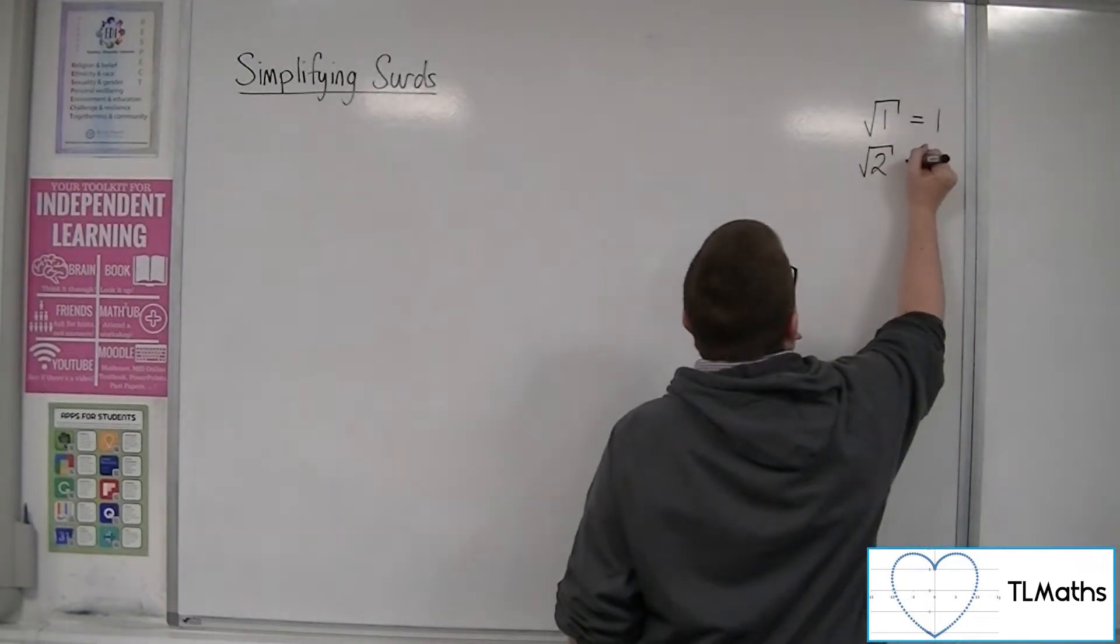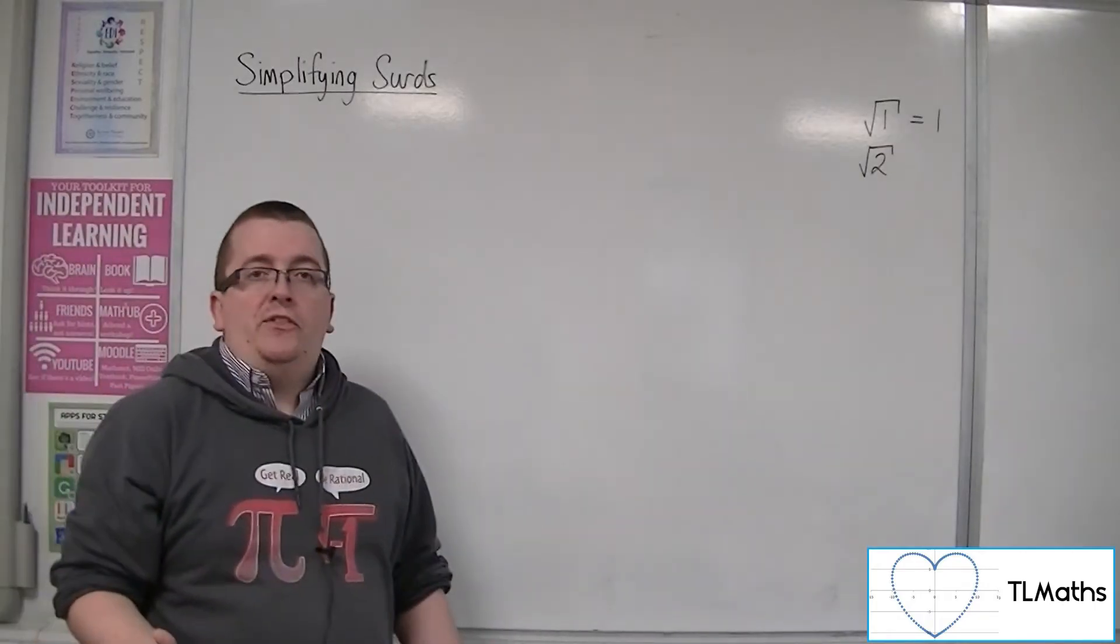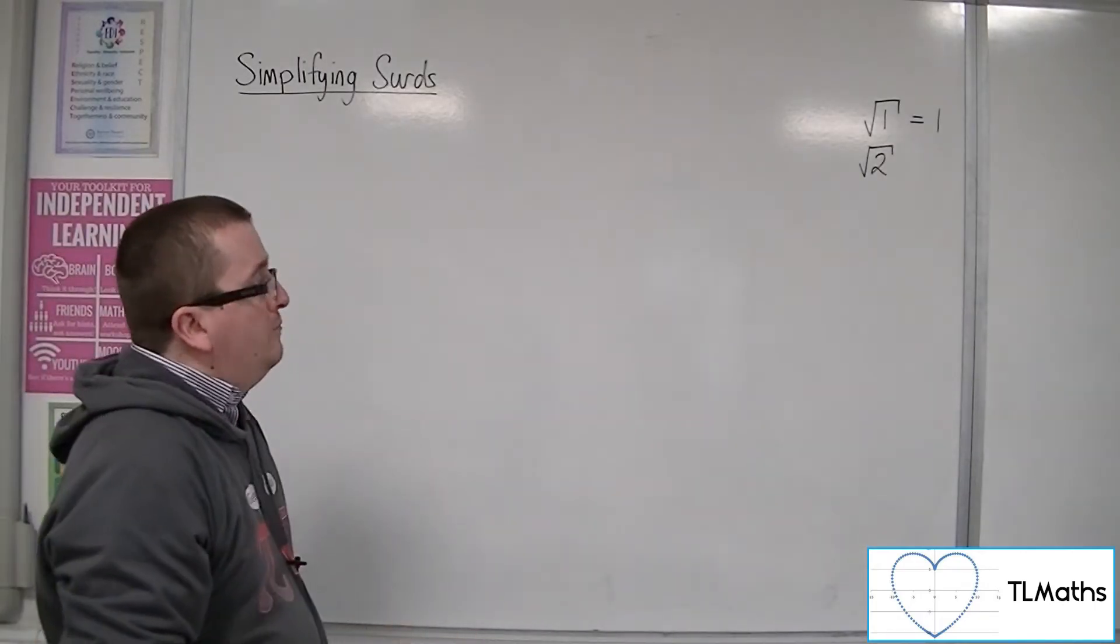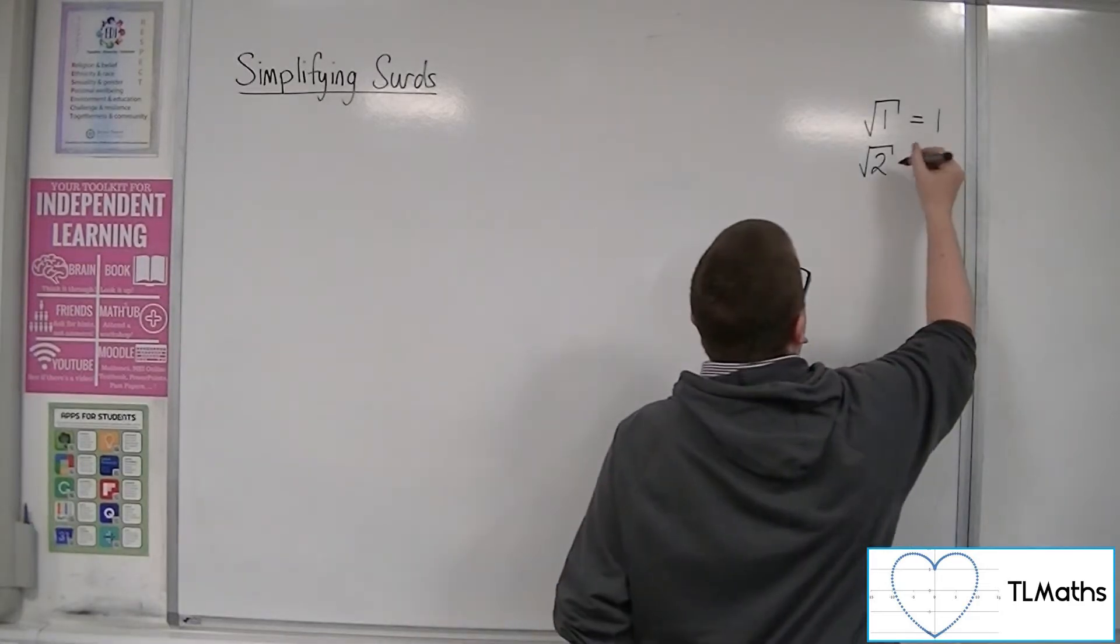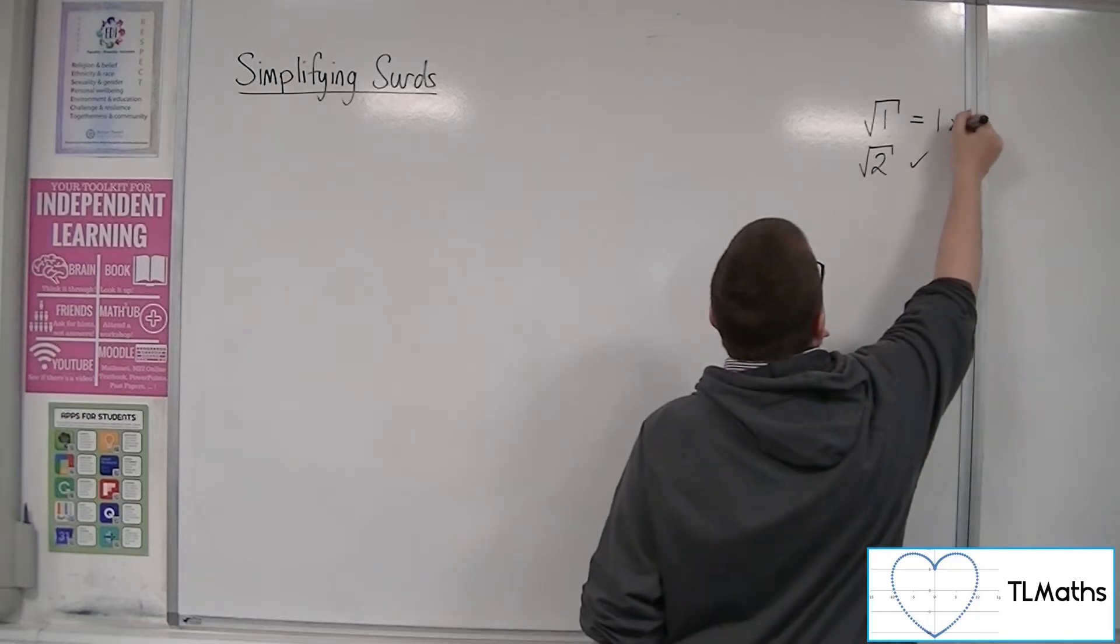Root 2 cannot be simplified down, so that means that root 2 is a surd. So that one is, but that one would not be.